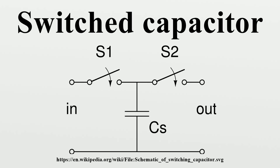Substituting for Q in the above, we have I = CS·(V1 − V2)·F. Let V be the voltage across the SC from input to output. So the equivalent resistance R = V/I = 1/(CS·F). Thus, the SC behaves like a resistor whose value depends on capacitance CS and switching frequency F.